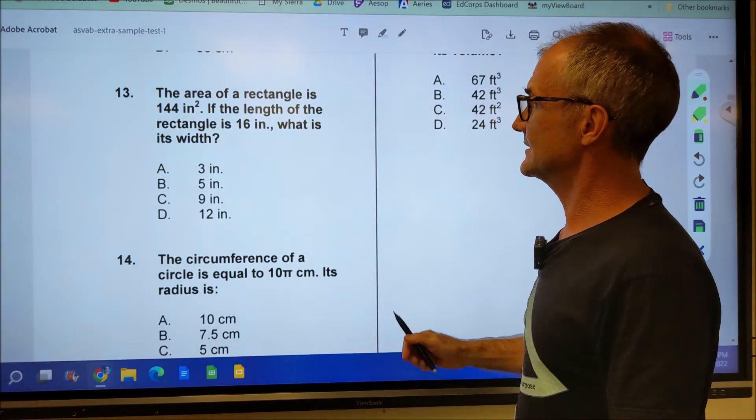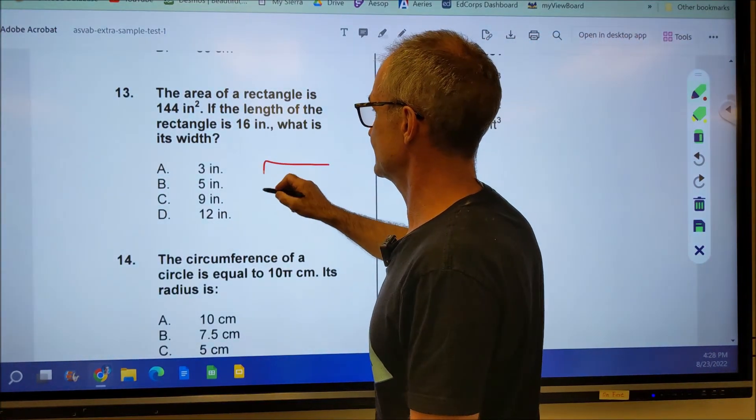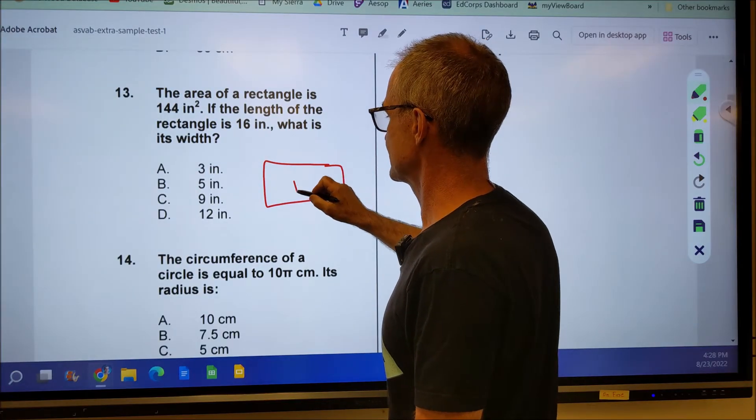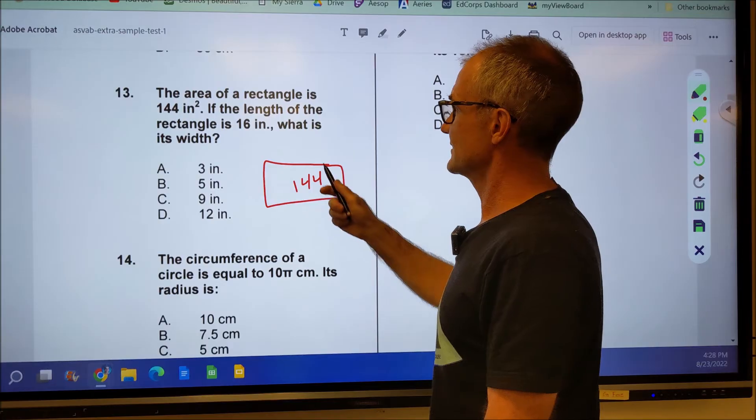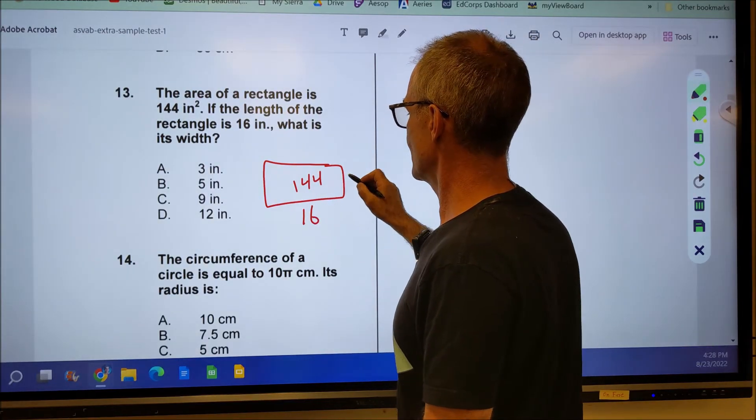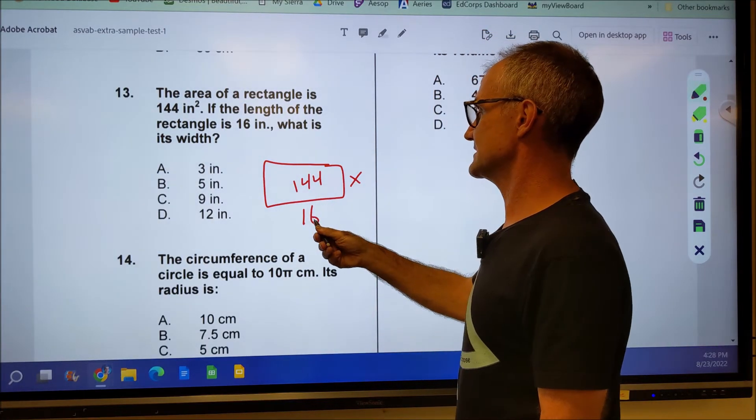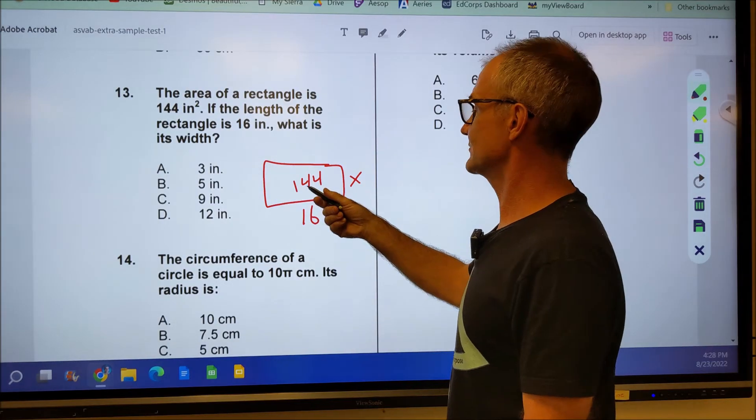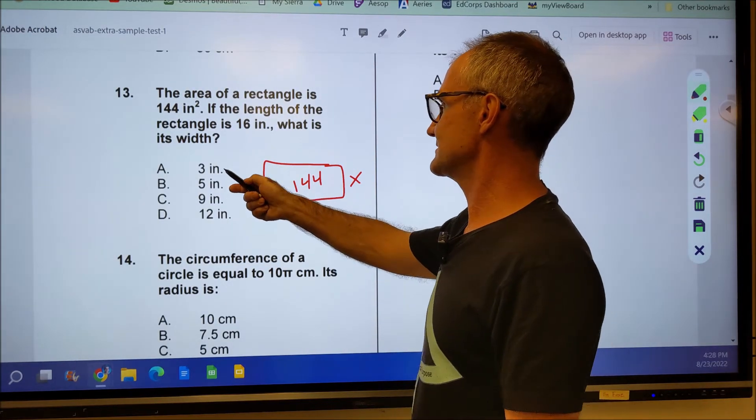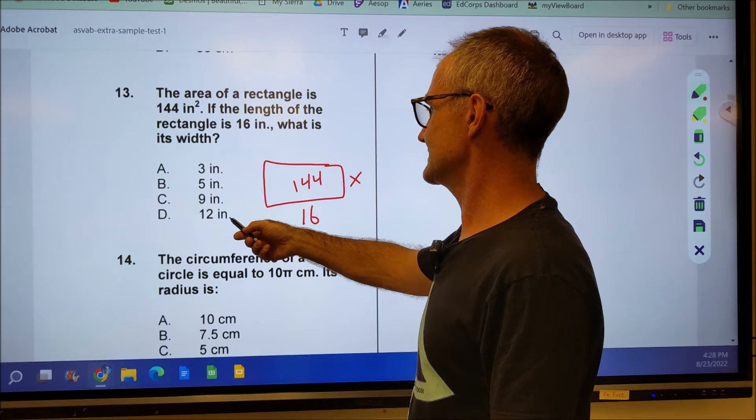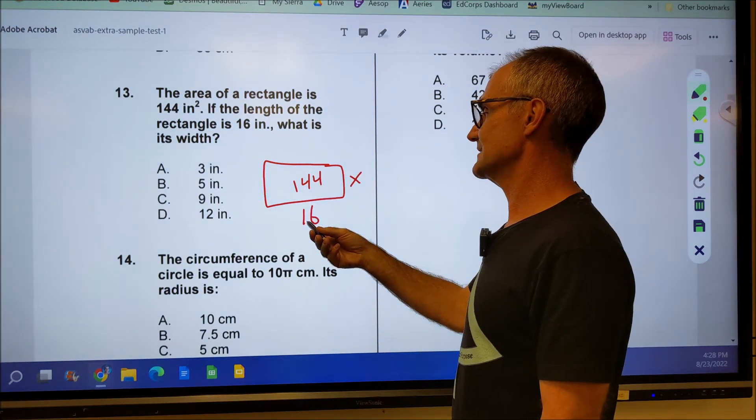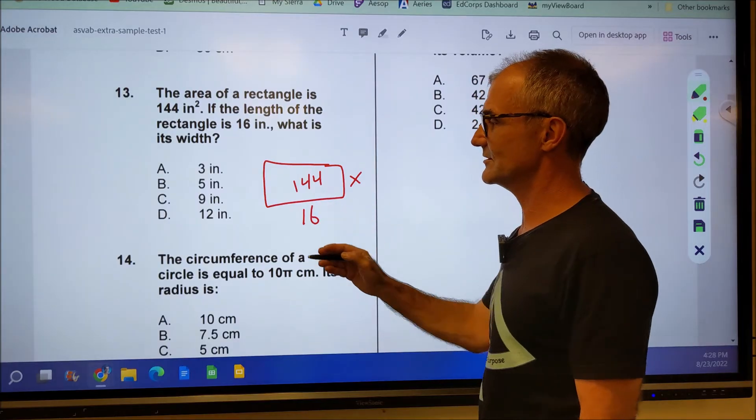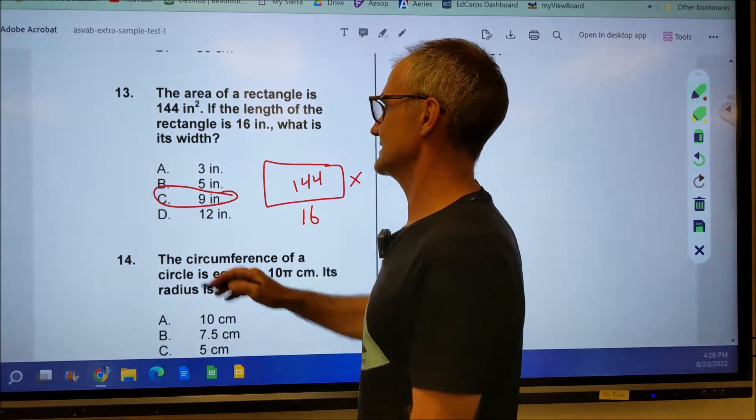Number 13, the area of a rectangle is 144 square inches. So base times height is going to be 144. The length of the rectangle is 16. What is its width? So 16 times what is going to equal 144? I could grab these numbers and plug them in and see 9 looks pretty close. 9 times 10 is 90 plus 54 is 144. So my answer is 9 inches.